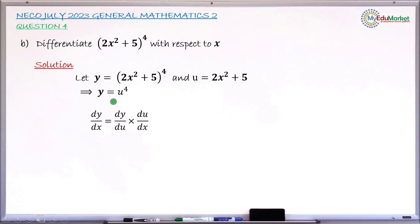We have y in terms of u as y = u⁴, and u in terms of x as u = 2x² + 5. To substitute into the chain rule formula, we need to find dy/du from the first function and du/dx from the second function.